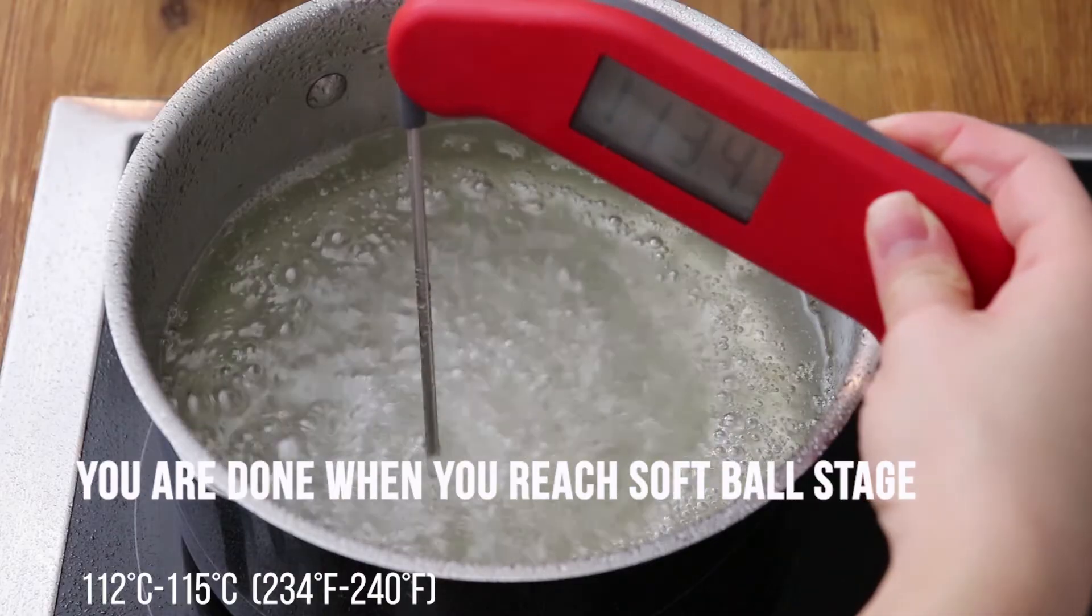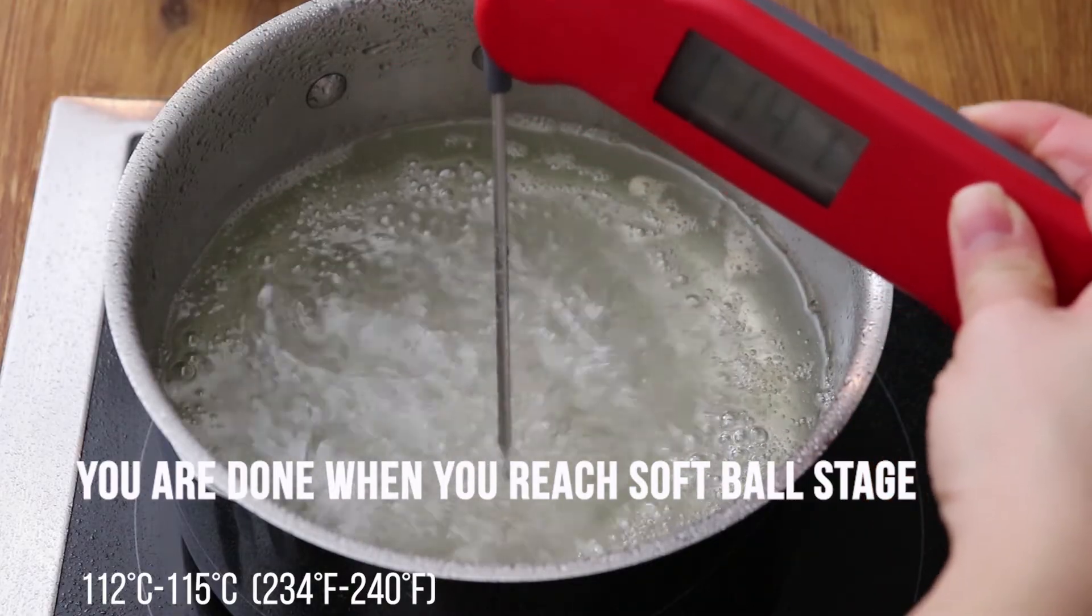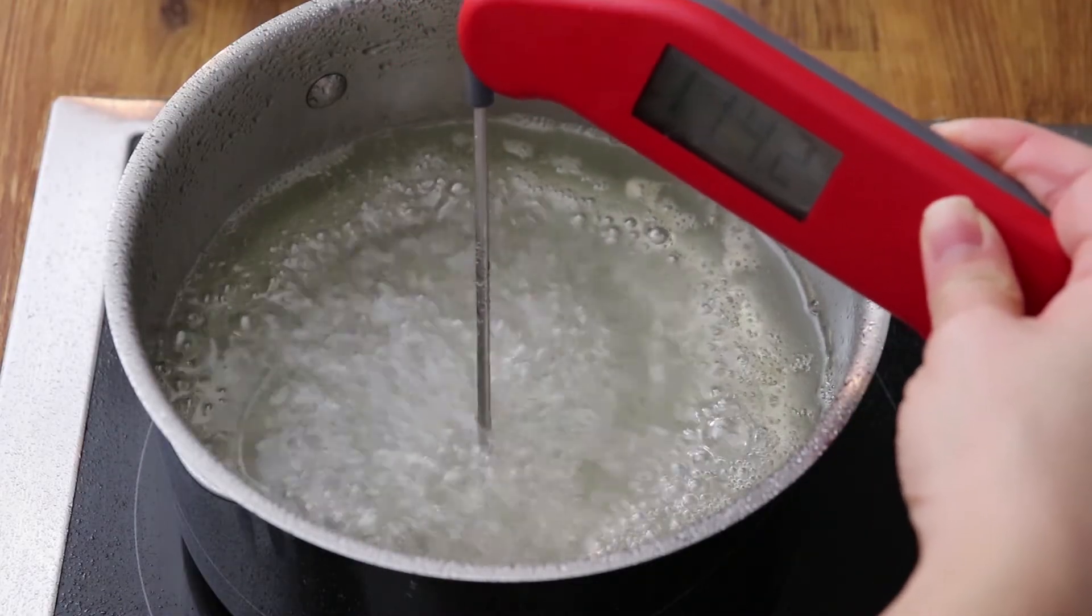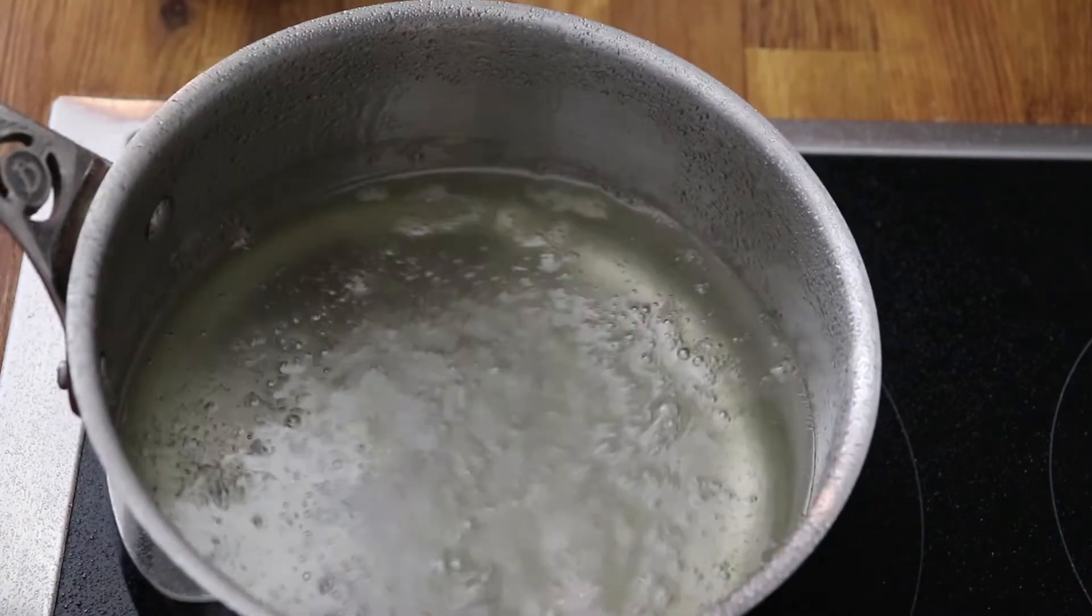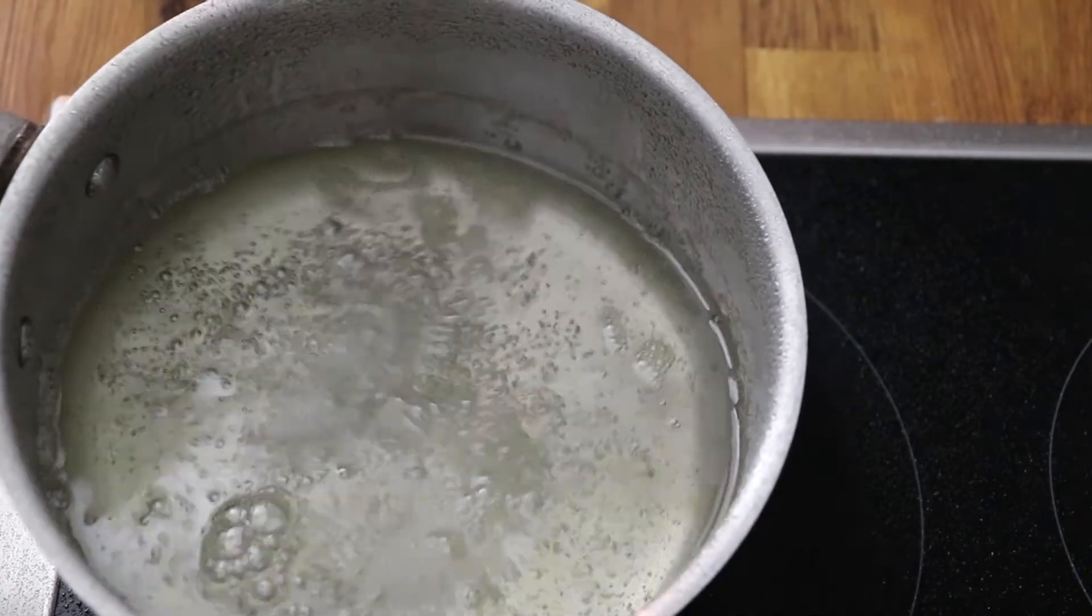Now we have reached the softball stage, which means that our invert sugar is ready. So time to take it off the heat and put it in our special jar.